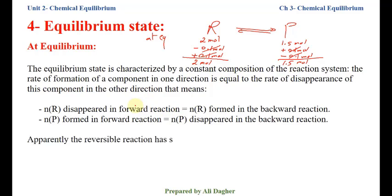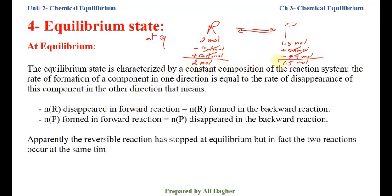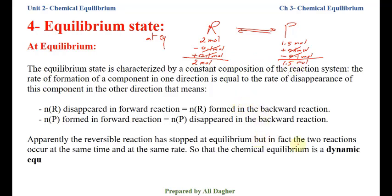Apparently the reversible reaction has stopped when the concentration or number of moles becomes constant — it seems the reaction has stopped at equilibrium. But in fact, the two reactions occur at the same time and at the same rate. Therefore, chemical equilibrium is called a dynamic equilibrium, not a static equilibrium, because the two reactions take place simultaneously with the same rate.